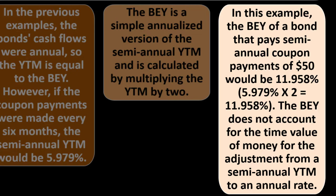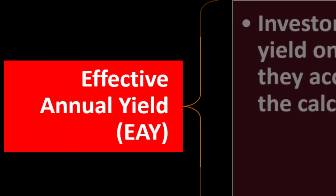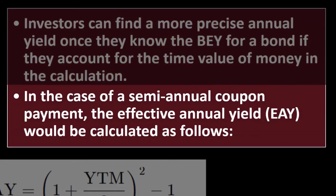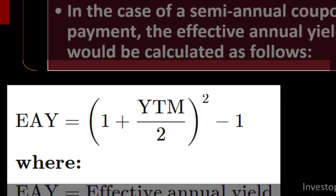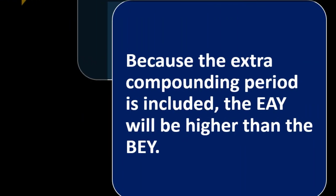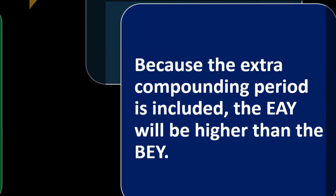The BEY does not account for the time value of money when adjusting from a semi-annual YTM to an annual rate. Effective Annual Yield (EAY): investors can find a more precise annual yield once they know the BEY by accounting for the time value of money. If the semi-annual YTM was 5.979%, they could use the EAY formula to find an EAY of 12.32%. Because the extra compounding period is included, the EAY will be higher than the BEY.